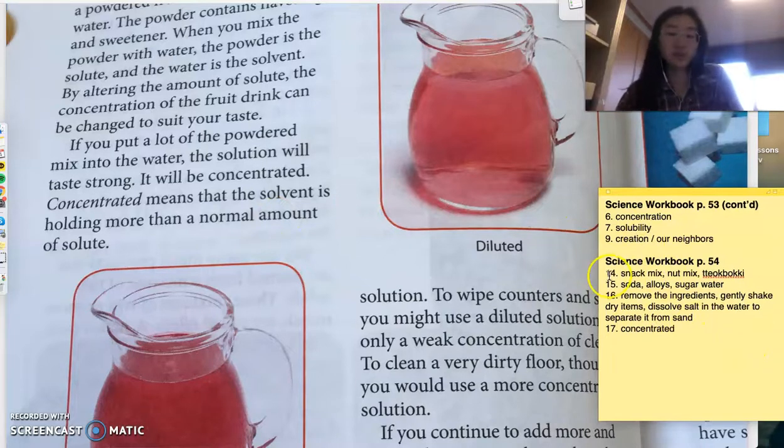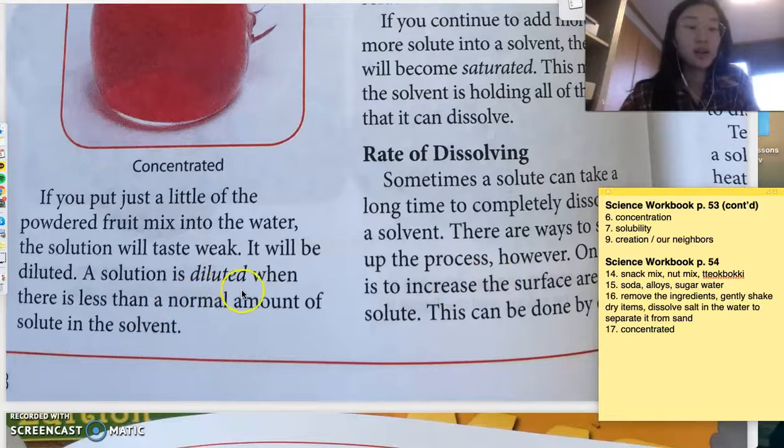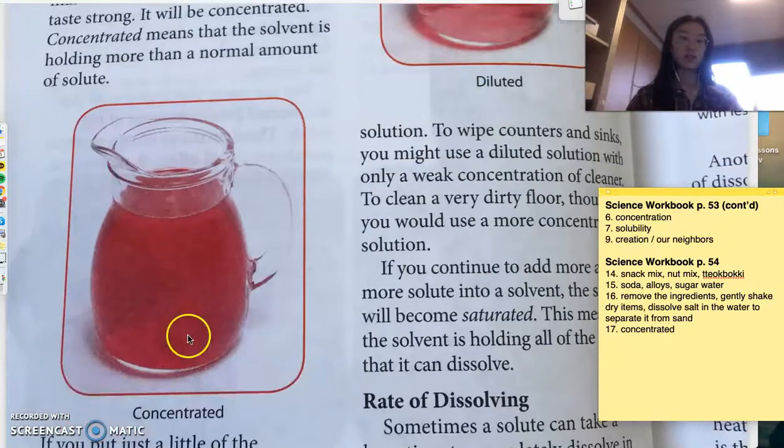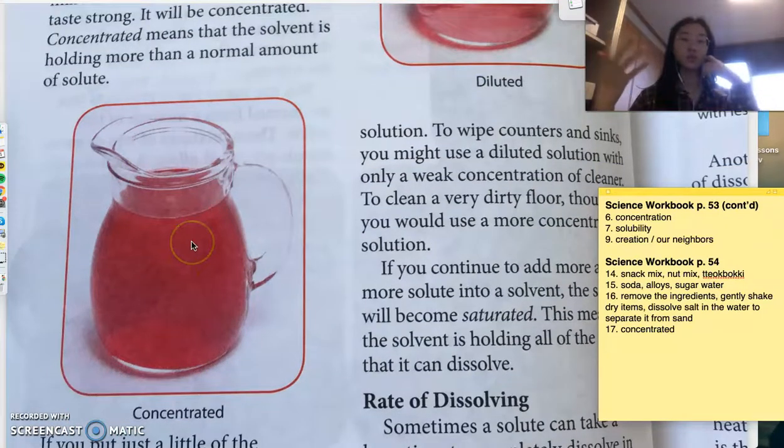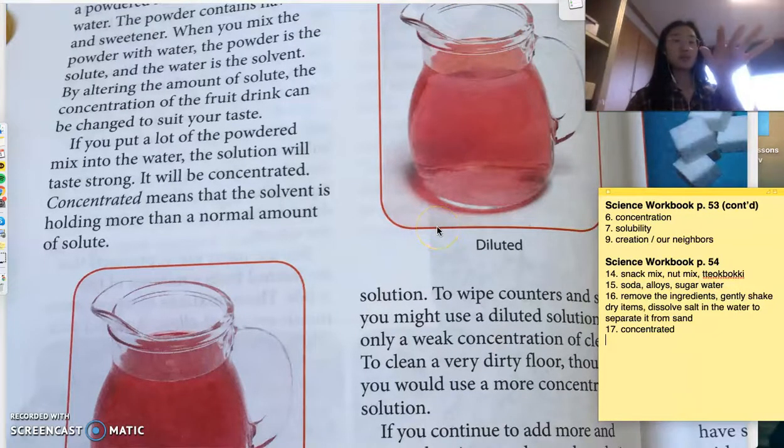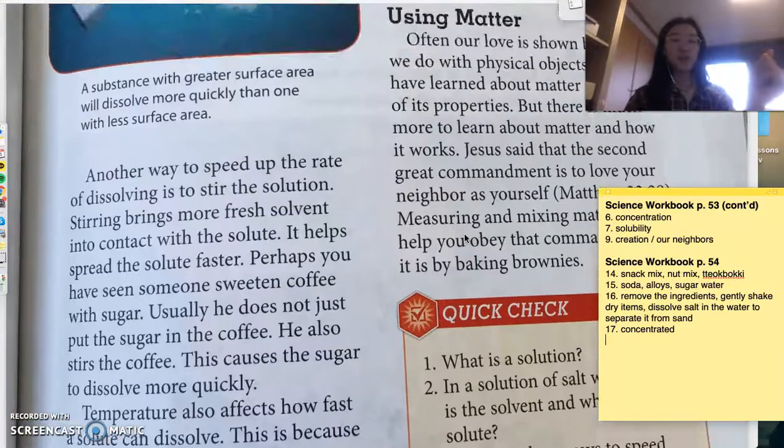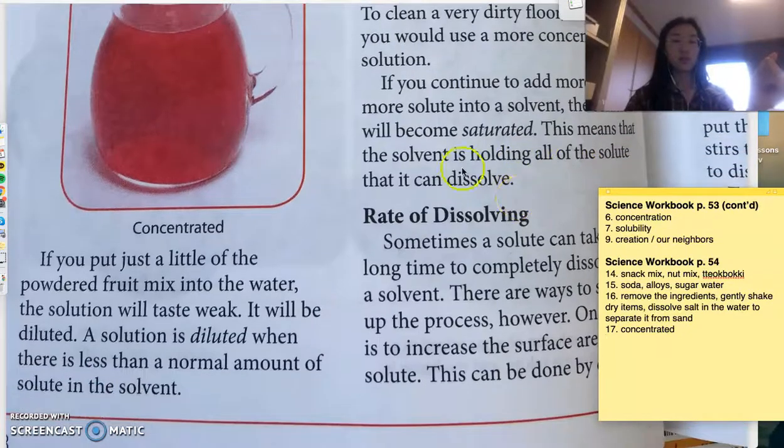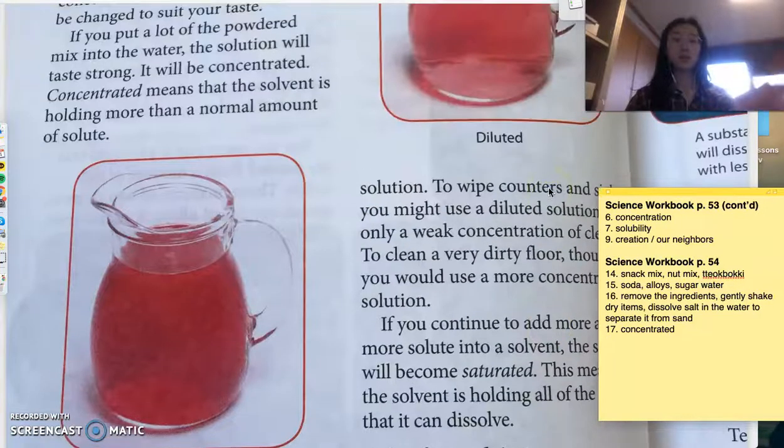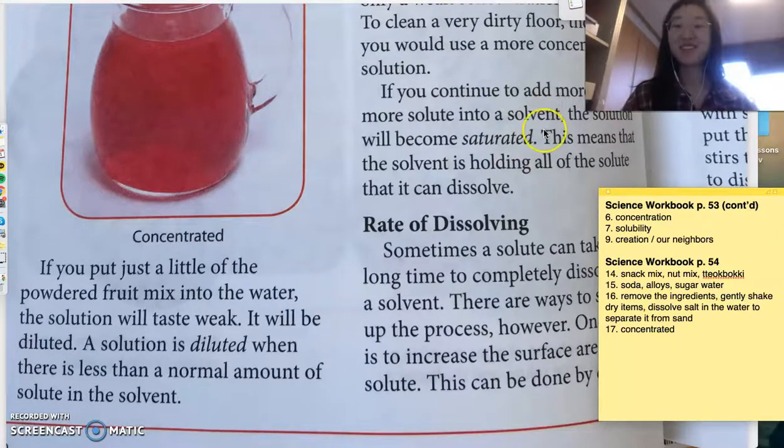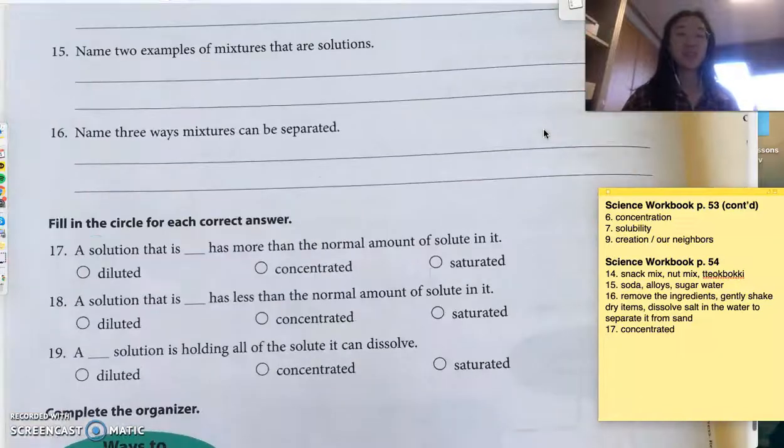Let's review the other two. Diluted is when there is less than a normal amount. So, like this. It's lighter color than this. This is concentrated, what we just wrote down. It's holding a more than normal amount of the powdered sugar drink. Diluted, they put less. This person doesn't like the strong strawberry flavor. And then the last one, saturated, is when the solvent is holding all of the solute that it possibly can dissolve. So, it's the darkest. Like my tea that I showed you in the other video. The very strong tea.